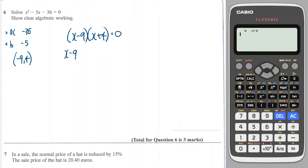So either x minus 9 equals 0, or x plus 4 equals 0. And if that's the case, x equals 9, or x equals minus 4.